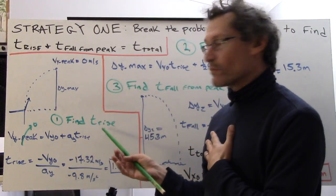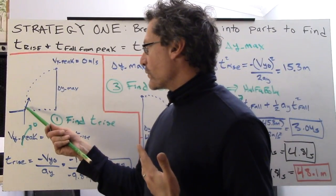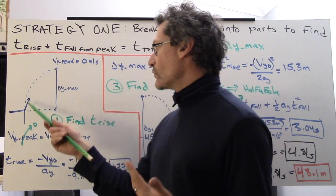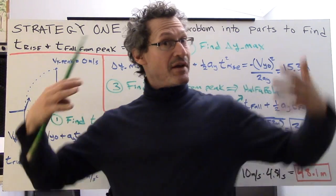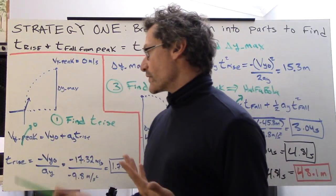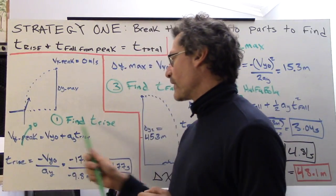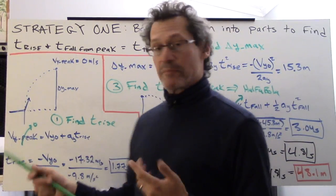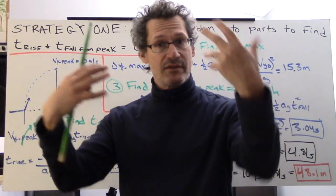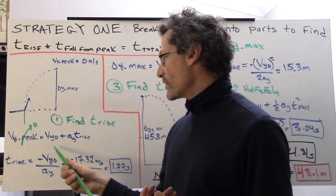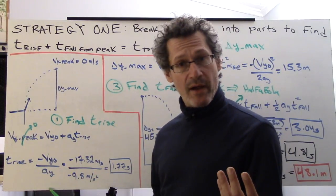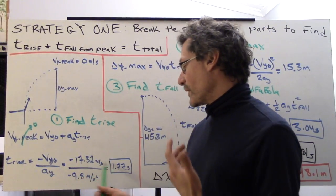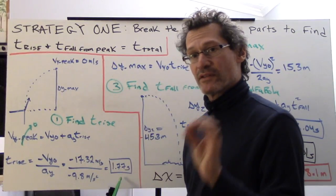Let's look at t rise first. We're at the platform and we want to figure out the time that it takes to go up to the peak. Once we find that time, we'll add it to the time of the fall down to the water. To find t rise, we've got v y peak which is always zero meters per second. We solve for t rise: t rise is negative v y naught over a y, and we get 1.77 seconds.